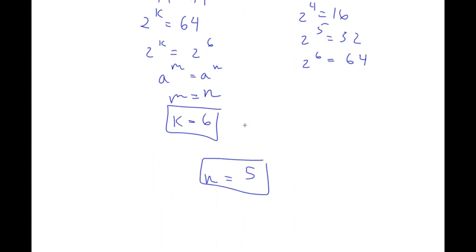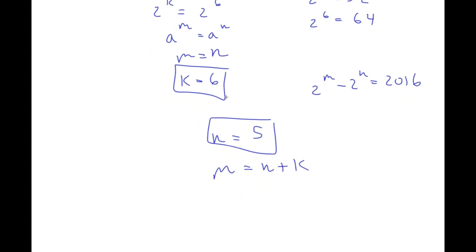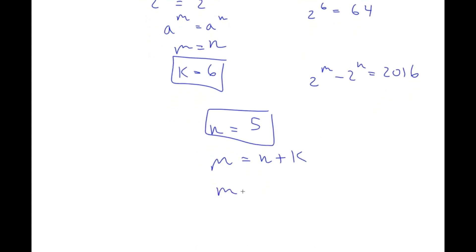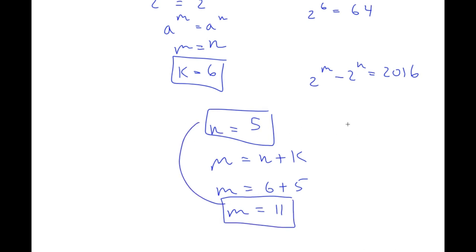However, remember our original equation: 2 to the power of m minus 2 to the power of n equals 2016. So far we've found our value for n, but not for m. But remember we stated that m equals n plus k, and we have our values for k and n, so we can plug them in. So m equals 5 plus 6, and 5 plus 6 is 11, so m is equal to 11.